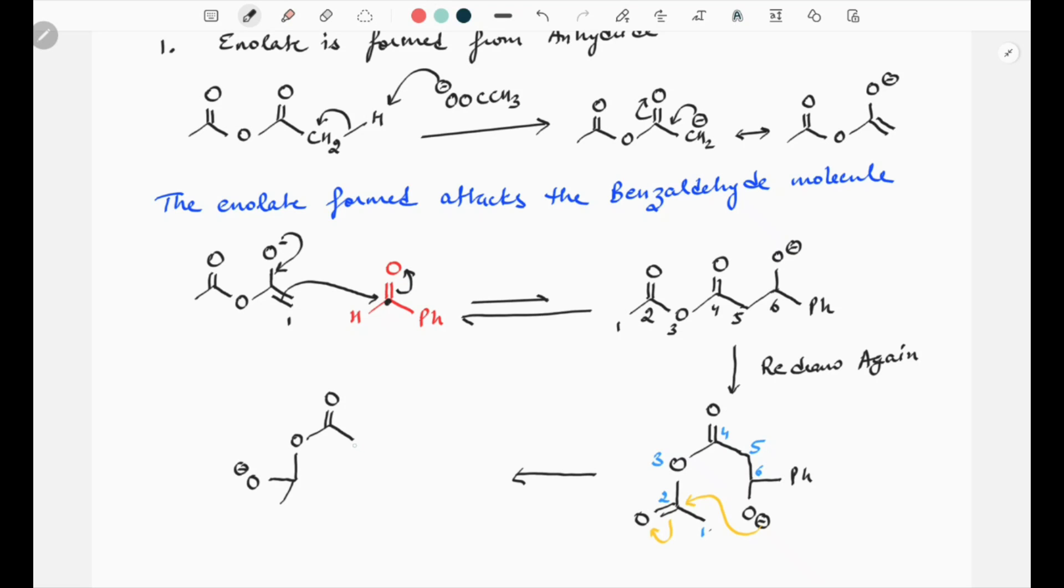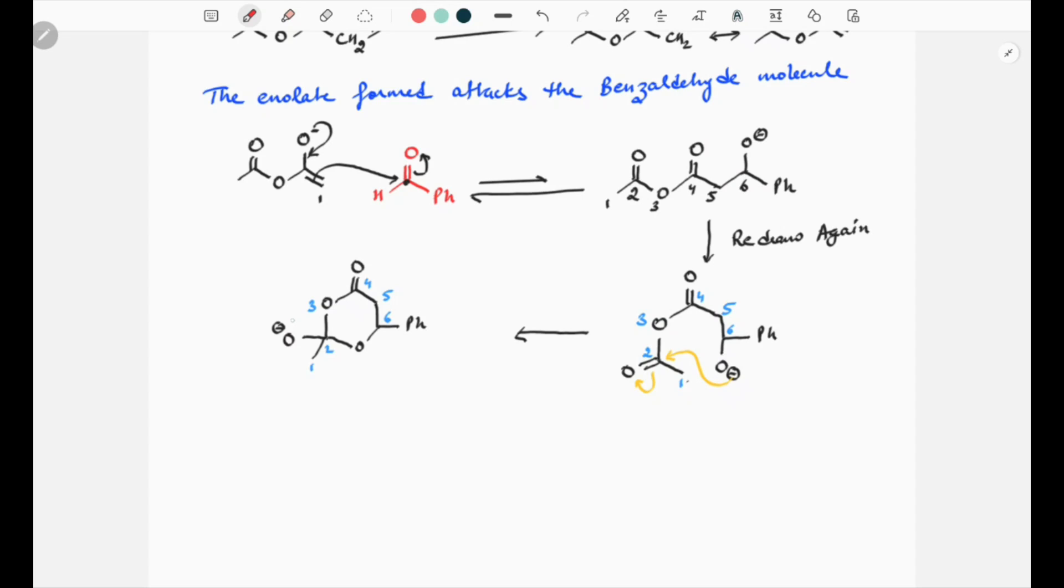So number 2 has O minus, and carbon number 1 we have oxygen here, oxygen here, C double bond O, this oxygen, and now we have oxygen here and this is phenyl. Let's mark numbers again - carbon number 1, 2, 3, 4, 5, and 6. This numbering always helps me to understand the mechanism and draw the products in a better way.